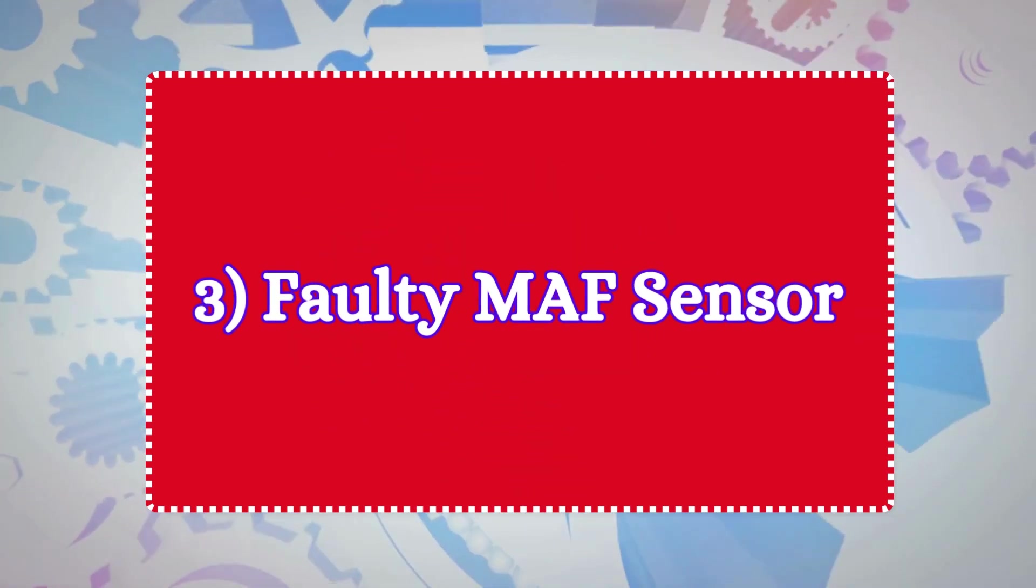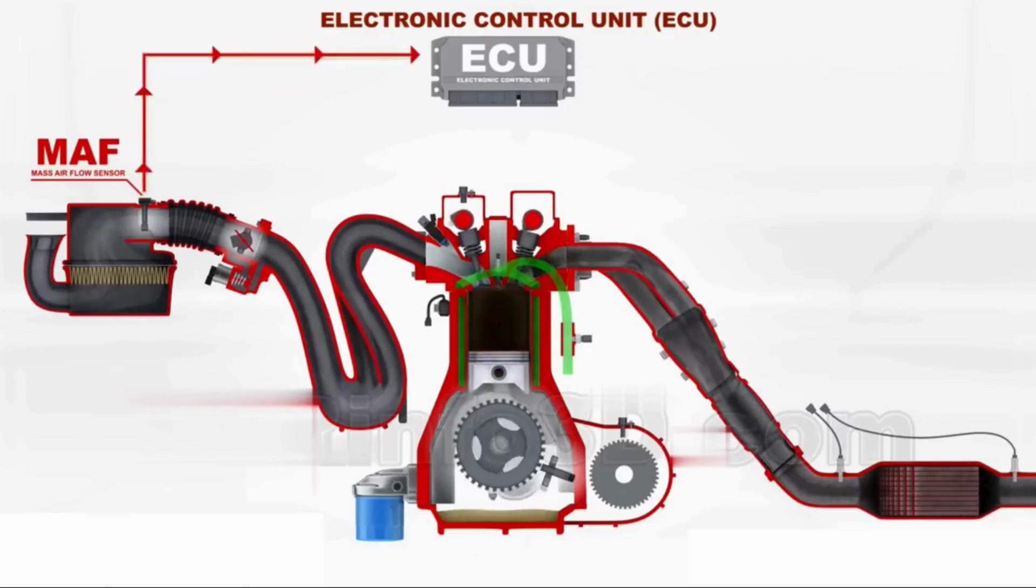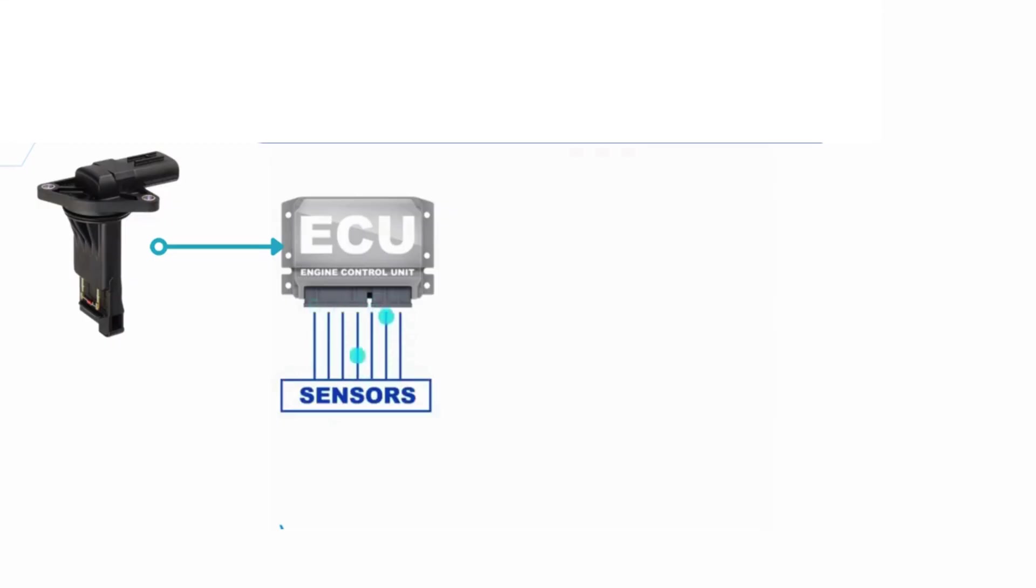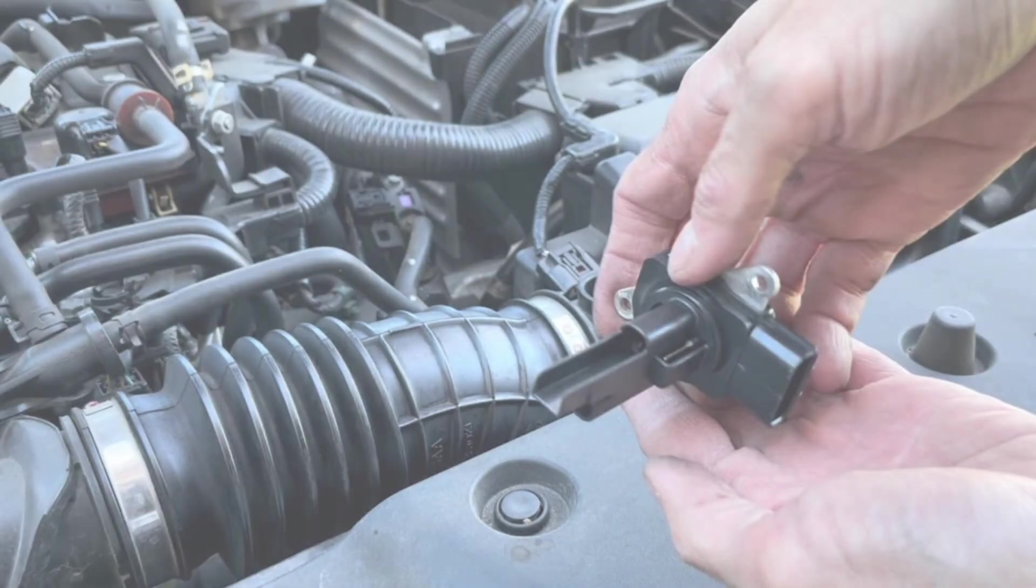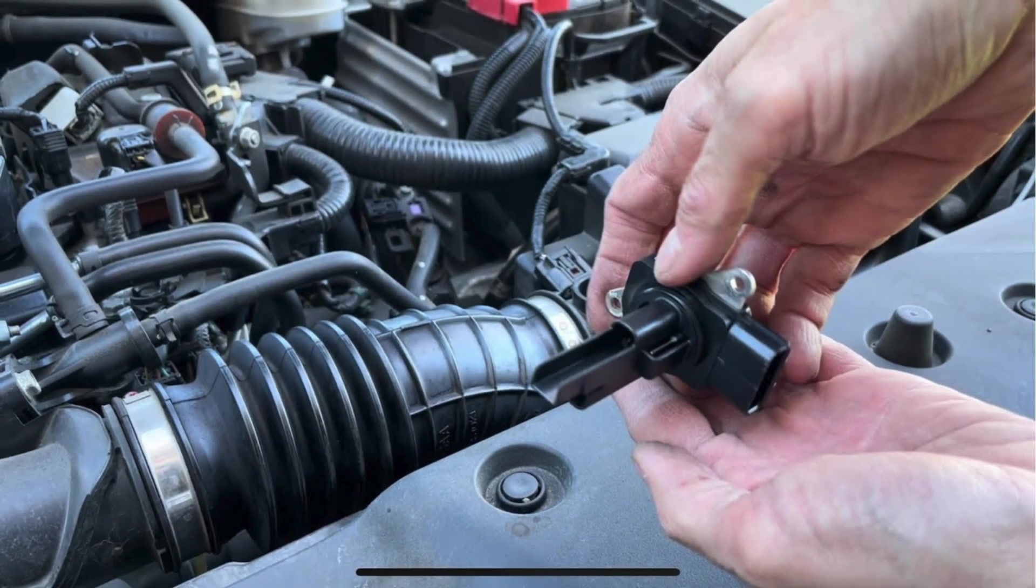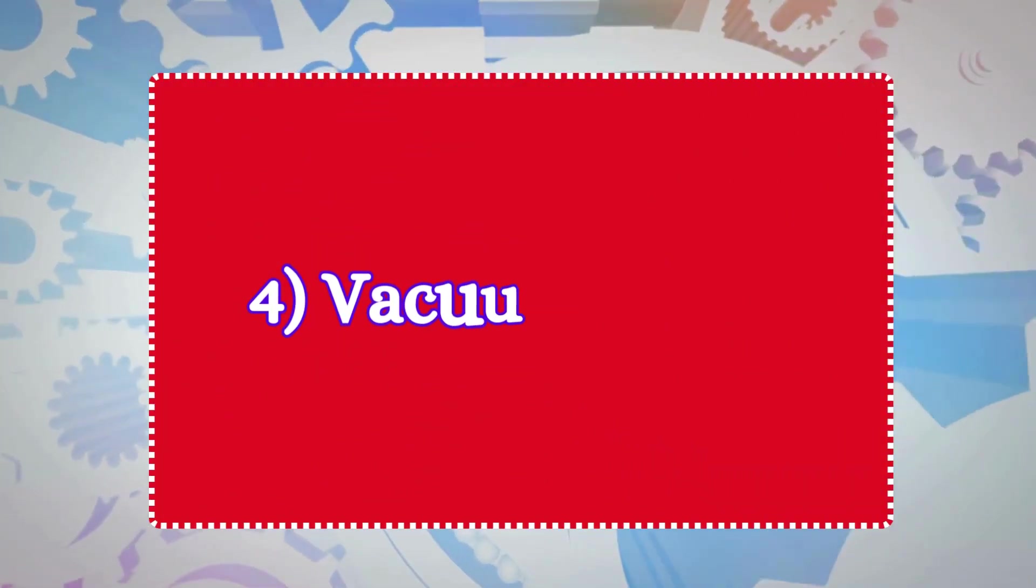3. Faulty MAF sensor. The MAF sensor measures the amount of air entering the engine and helps the engine control unit adjust the air-fuel ratio. A faulty sensor can provide incorrect air readings, causing erratic air-fuel mixtures, resulting in jerking during acceleration. Properly inspect your MAF sensor. If it is severely clogged or worn, it is recommended to replace it.